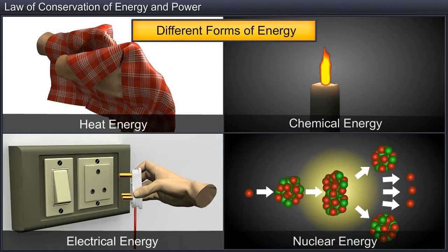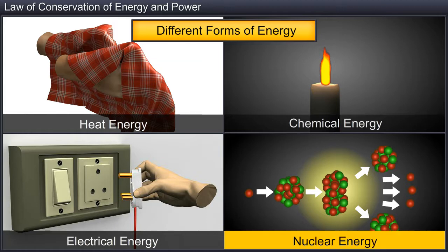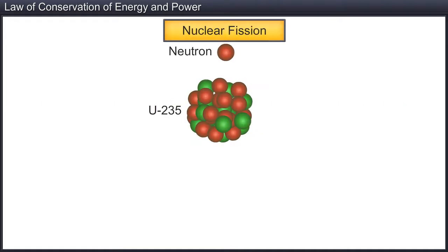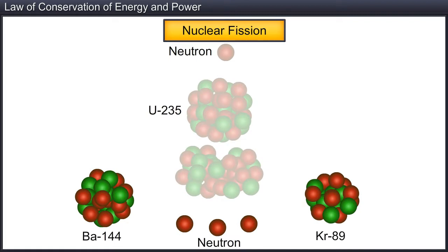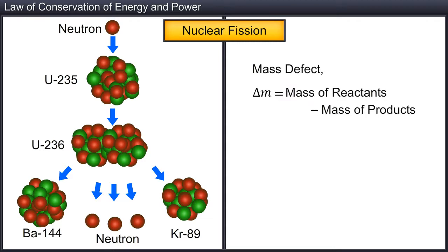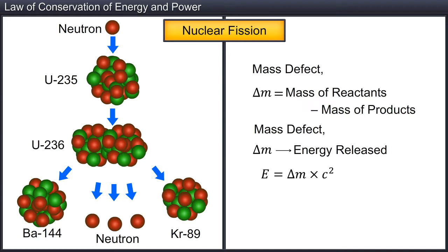One of the most important forms of energy is nuclear energy. Nuclear energy is energy derived from a nuclear reaction such as nuclear fusion or nuclear fission, from which energy may be released in accordance with Einstein's mass-energy equivalence relation. In nuclear fission, a heavy nucleus like uranium-235 absorbs a slow neutron and splits into lighter nuclei. The final mass of products is observed to be less than the total mass of the reactants, and this difference in mass is known as mass defect, denoted by Δm. The mass defect Δm is converted into energy in accordance with E = Δm × c².